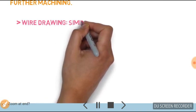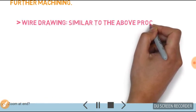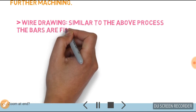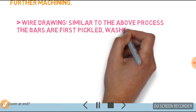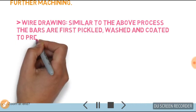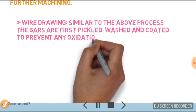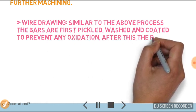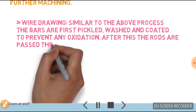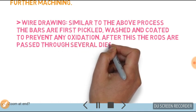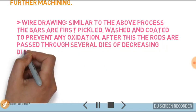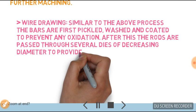Second one is wire drawing. Similar to the above process, the bars are first pickled, washed, and coated to prevent any oxidation. After this, the rods are passed through several dies of decreasing diameter.